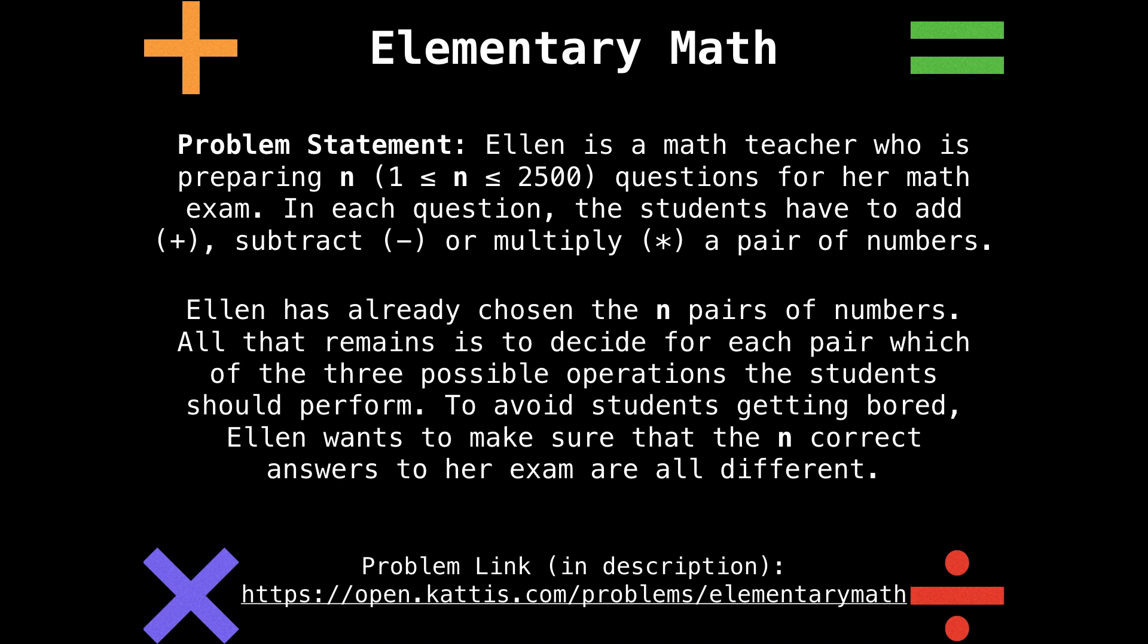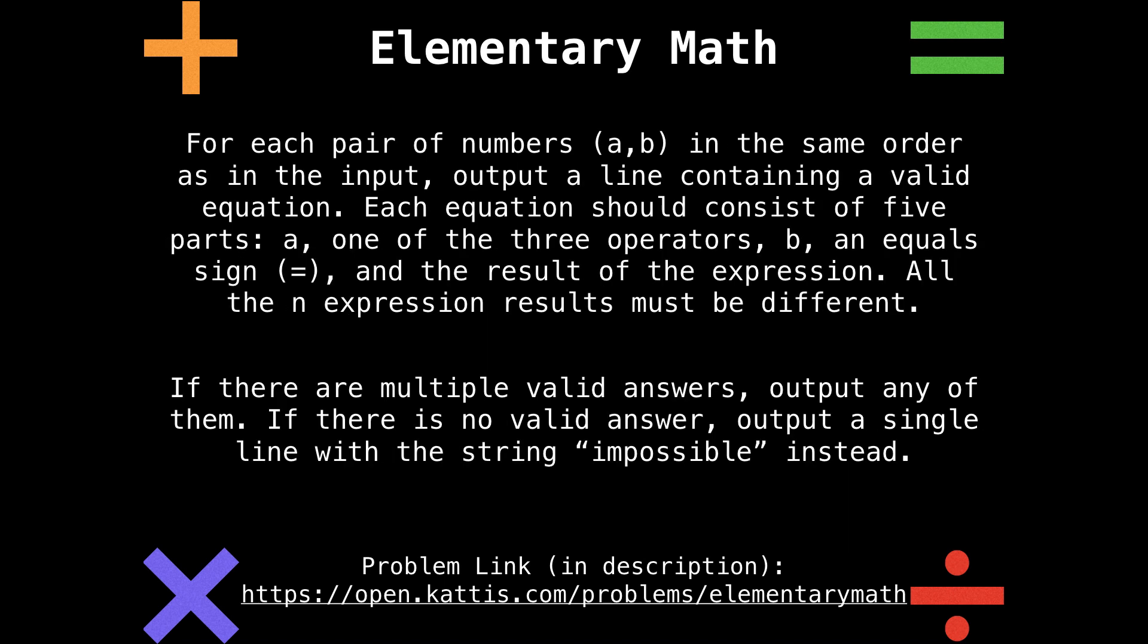For each pair of numbers (a,b) in the same order as in the input, output a line containing a valid equation. Each equation should consist of five parts: a, one of the three operators, b, an equals sign, and the result of the expression. All the n expression results must be different. If there are multiple valid solutions, output any of them. If there are no valid answers, output a single line with the string 'impossible' instead.